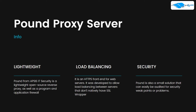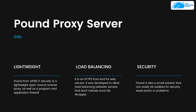At number seven we have Pound, developed by APSIS, an IT security company. This program server is extremely lightweight, contains a reverse proxy as well as a programmable application firewall, and comes with a default load balancer. Since it is developed by a security company, security is a key feature — Pound is a small solution that can easily be audited for security weak points or problems.